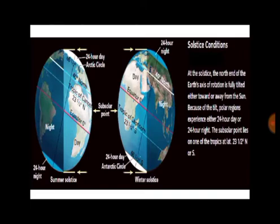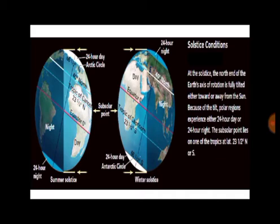In the figure given, you can see that at the solstice, the north end of the Earth's axis of rotation is fully tilted either towards or away from the sun. Because of the tilt, the polar regions experience either 24 hours of day or 24 hours of night. The subsolar point lies on one of the tropics at latitude 23.5 degrees north or south.